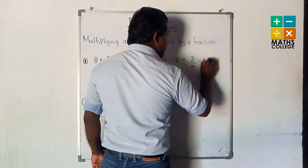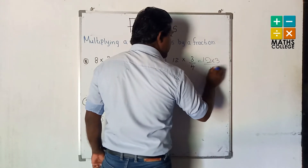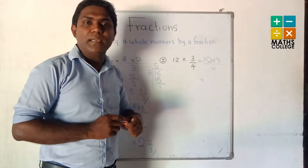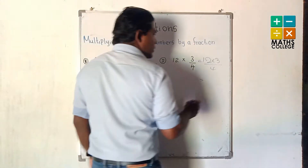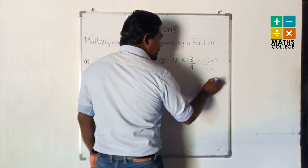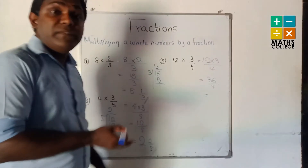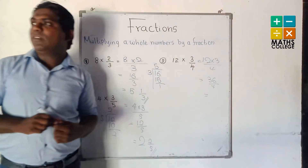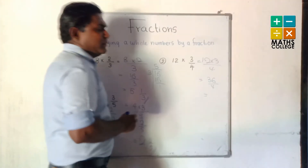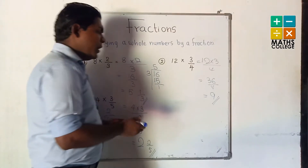Third example: 12 multiplied by 6 multiplied by 3 upon 4. 12 multiplied by 3 is 36. 36 divided by 4 — 36 is divisible by 4. The answer is 9.